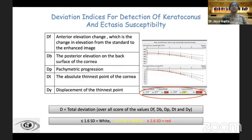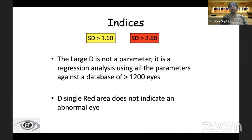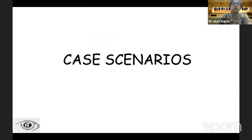The D values: a total D beyond 2.6 is flagged red. Earlier maps had different D values — df, db, dp, dt, and dy. The newer maps now include dA, which is the deviation of the ART max. The D value does not by itself indicate an abnormal eye; a large D is not a single parameter but rather a regression analysis using all parameters against a database of 1,200 eyes.